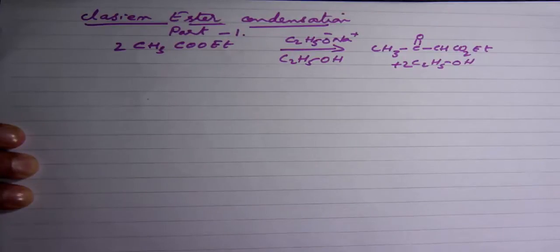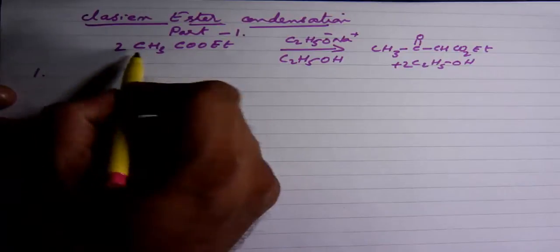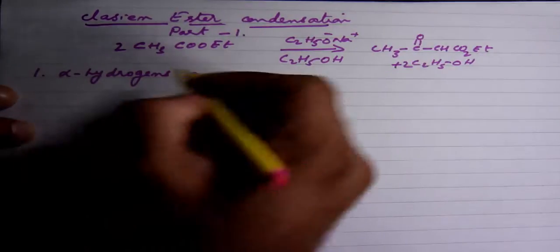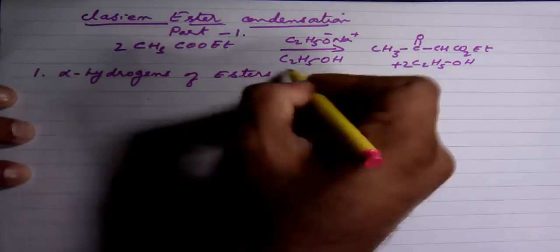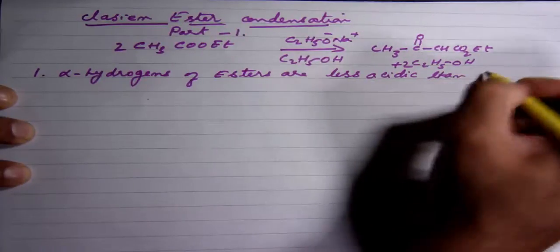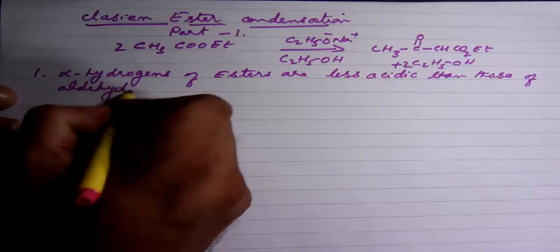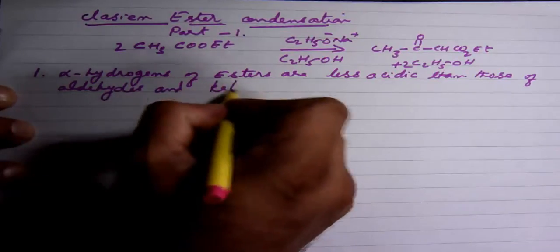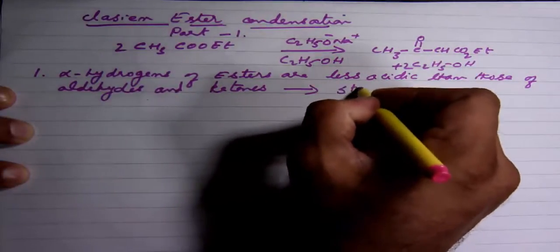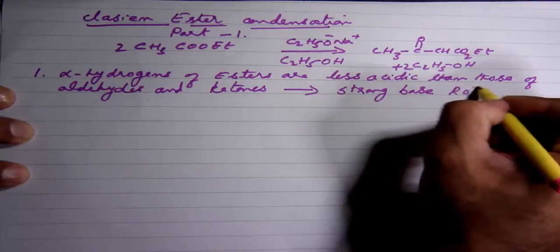This reaction is similar to the aldol condensation involving nucleophilic attack of a carbon anion on an electron-deficient carbonyl carbon, but there are primarily two differences. The first difference is that in the Claisen ester condensation we're using an ester. Alpha hydrogens of esters are less acidic than those of aldehydes and ketones, so because of this difference we must use a strong base, stronger than hydroxide, and that's why we use the alkoxide ion instead of hydroxide ion.